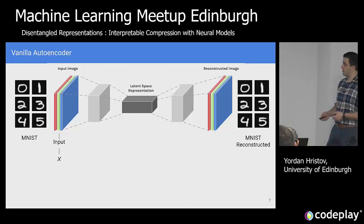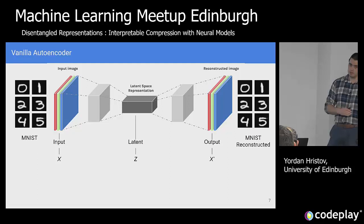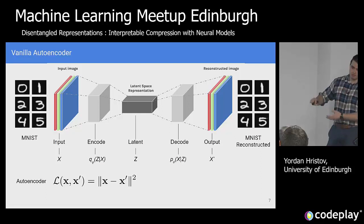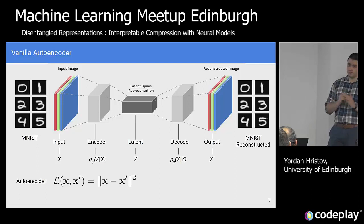After the bottleneck, you start reversing the process: you take the information there and try to reconstruct the same image you fed in. That's basically the objective you use when you train the model — you have your input, your output, and your latent representation Z, with an encoder parameterized by phi and a decoder parameterized by theta. The objective you give the optimizer is to make the output as close as possible to the input while still feeding it through this lower-dimensional bottleneck. That's the spirit of compressing visual information.